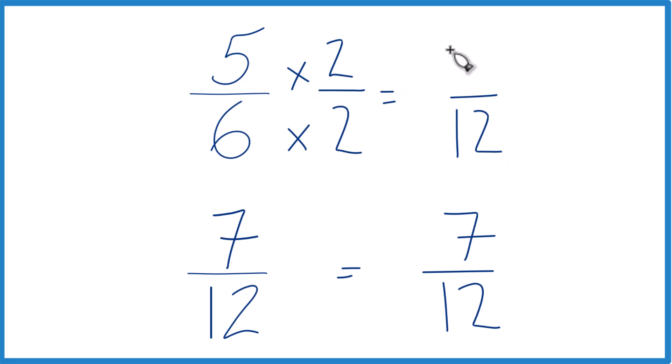5 times 2, 10. And you can see that we have the same denominator. So 10 is greater than 7. So 10/12, that is greater than 7/12. These are equivalent fractions here.